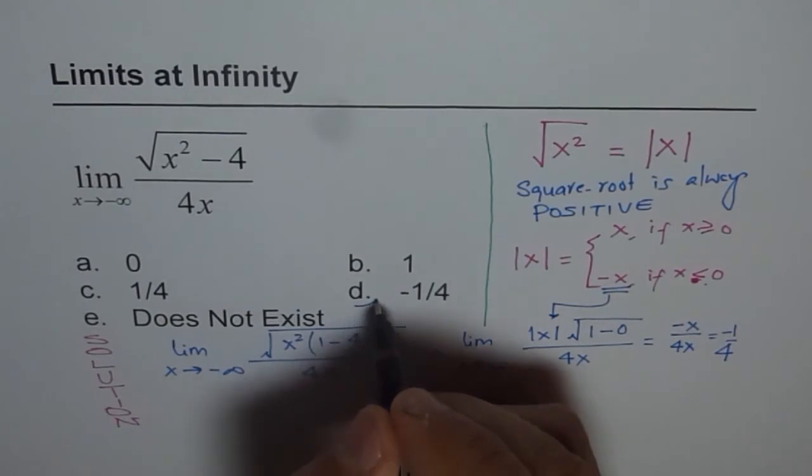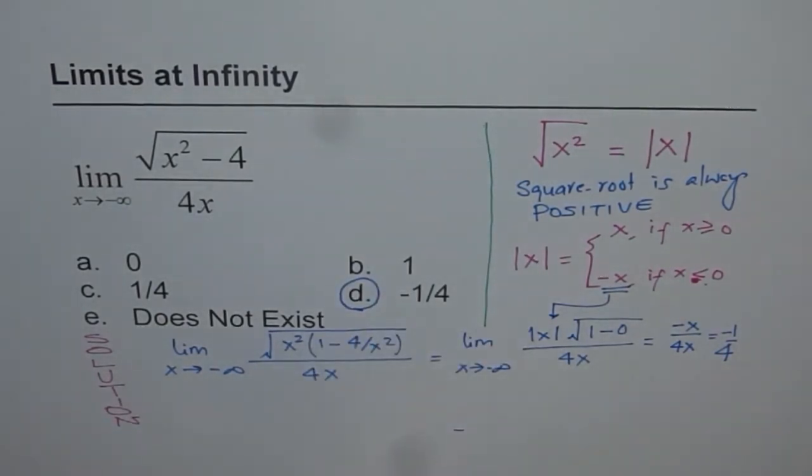So the right choice is D, and that is how we get it. Do you understand? It is not 1 over 4, it is minus 1 over 4.